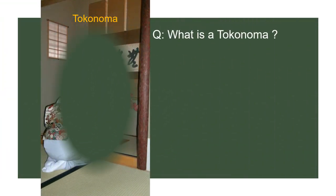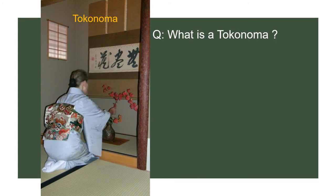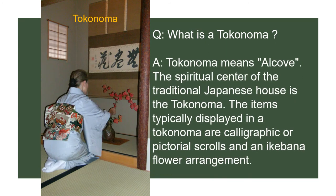What is Tokonoma? Tokonoma means alcove. The spiritual center of the traditional Japanese house is the Tokonoma. The word 'Toko' means floor or bed, and 'Ma' means space or room. The items typically displayed in Tokonoma are calligraphic or pictorial scrolls and an Ikebana flower arrangement.